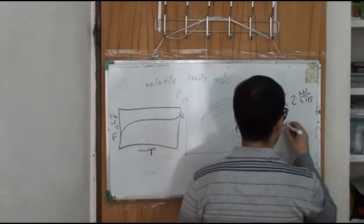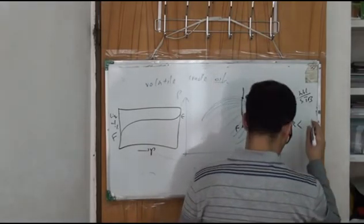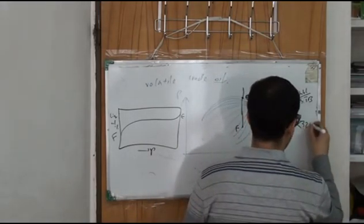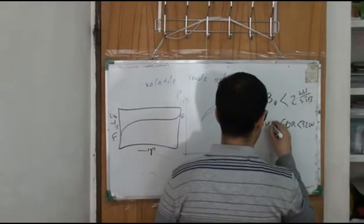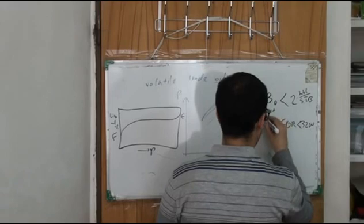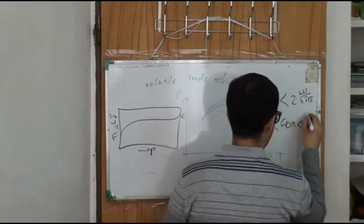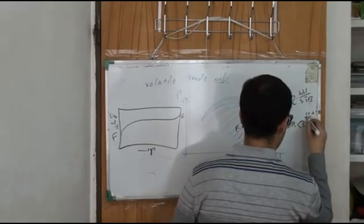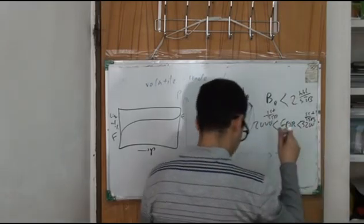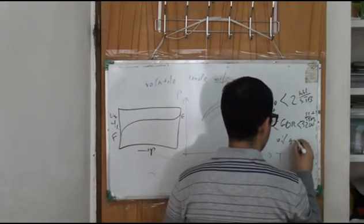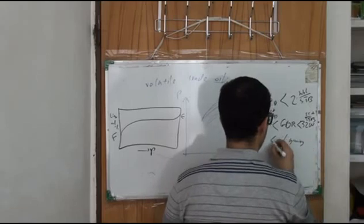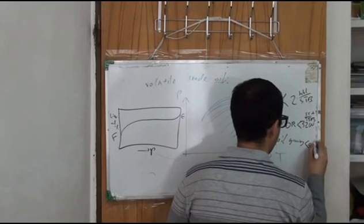and the GOR, gas-oil ratio, usually between... and API gravity between 45 and 55 API.